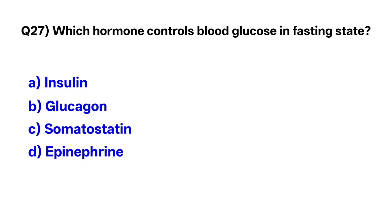Question number twenty-seven: Which hormone controls blood glucose in the fasting state? The correct option is B, glucagon.